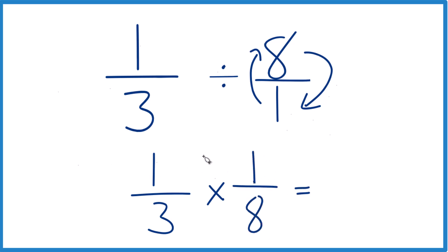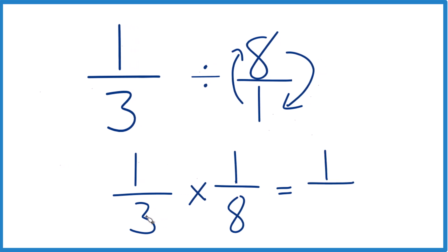With fractions, we multiply the numerators, one times one, that's one, and then we multiply the denominators, three times eight is twenty-four.